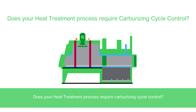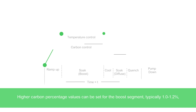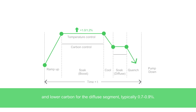Does your heat treatment process require carburizing cycle control? The solution is multi set point control via a set point program for temperature and carbon control loops. Higher carbon percentage values can be set for the boost segment, typically 1.0 to 1.2%, and lower carbon for the diffuse segment, typically 0.7 to 0.9%.